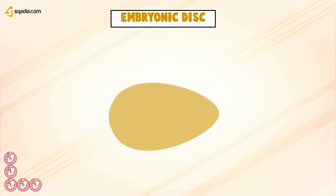Let's understand it. This is the embryonic disc with a dorsal view. This is the cranial end, and this is the caudal end. The primitive streak first appears in the epiblast at the caudal end of the embryonic disc, extends towards its center, and then develops the primitive groove in its dorsal surface. At the cranial end of this develops the primitive node.